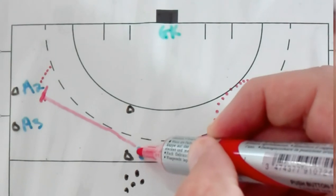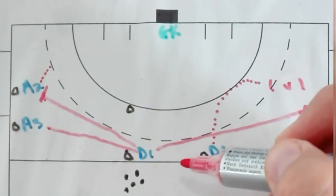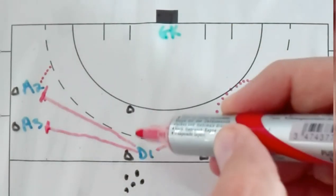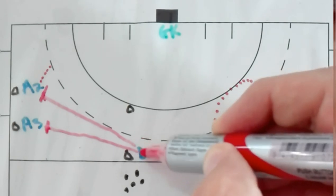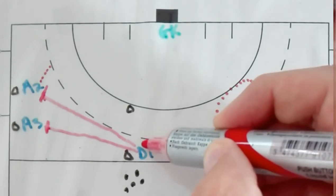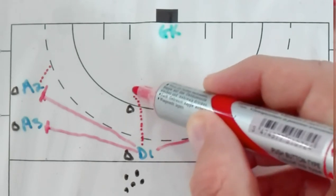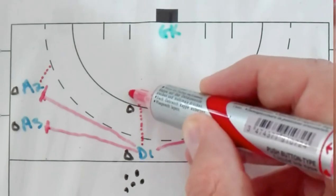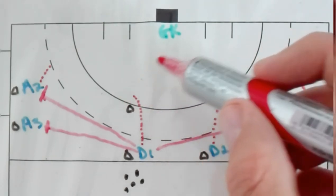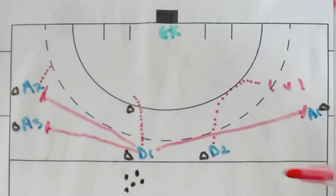defender number one will once again pass the ball to attacker number three. Attacker number three will receive it. After defender number one passes the ball, they are becoming the second defender in the 3v2 but they can only join if they get past this cone. So they need to run as quick as they can to set up and now this will become a 3v2 situation in this 25 area.